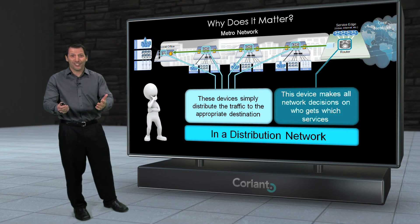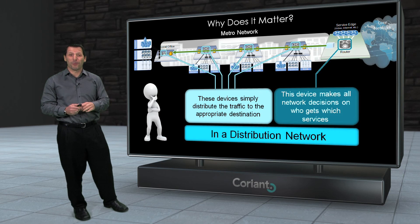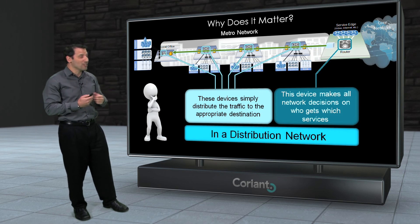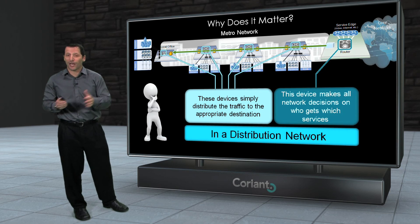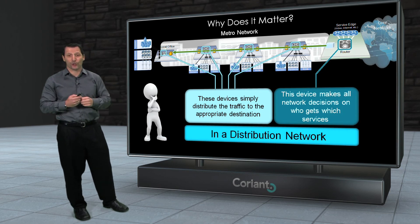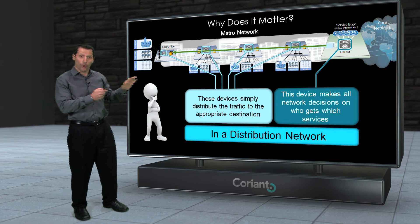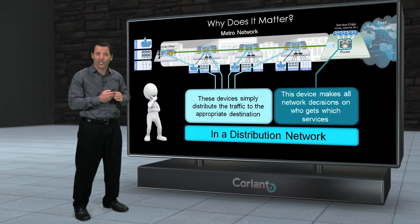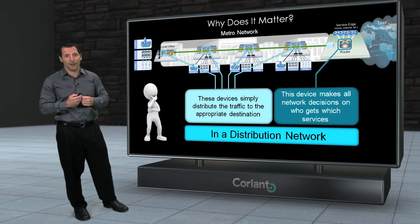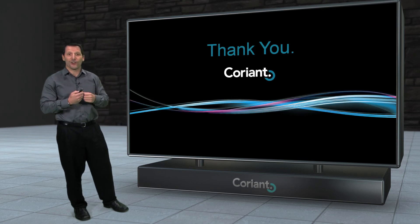So that brings us to the end of the session. Hopefully dispelling these two prominent myths about traffic flow in these parts of the network will help you make better decisions about how to build your network, what solutions to select, and where to put your critical resources. If you want more information on Coriant's solutions for these different types of networks, please visit us at Coriant.com. I hope you found this session interesting — thank you for watching.